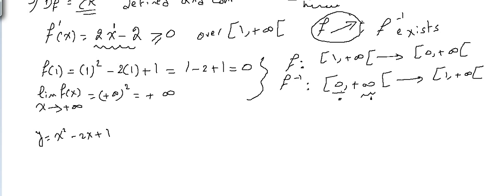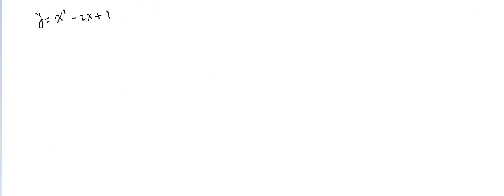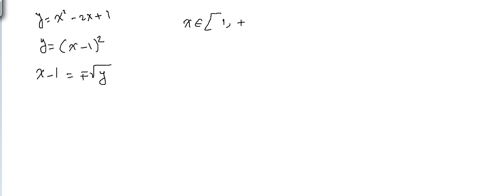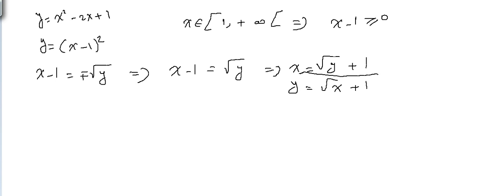To find f⁻¹, start with y = x² - 2x + 1, which can be rewritten as y = (x - 1)². Taking the square root of both sides: x - 1 = ± √y. Since x ∈ [1, +∞), x - 1 ≥ 0, so we take the positive root: x - 1 = √y, giving x = √y + 1. Interchanging x and y: f⁻¹(x) = √x + 1.